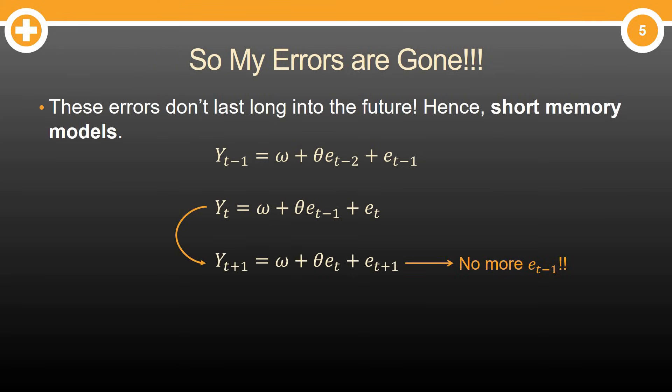Well, let's look at tomorrow. Tomorrow will depend on some unknown error that will happen tomorrow plus the error today. But look, there's no more error from yesterday. It's essentially the errors are gone. It's like they've been forgiven. Hallelujah!